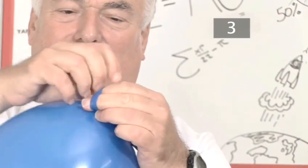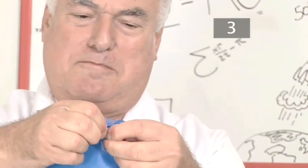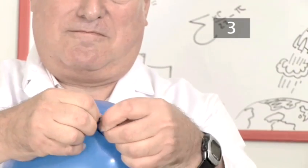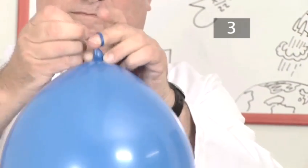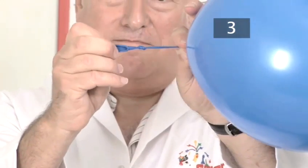Tying the balloon can be a bit fiddly. One way is to wrap it around your finger first, then tuck the end through the hole. If you are having difficulty blowing or tying a balloon, ask an adult to help you.